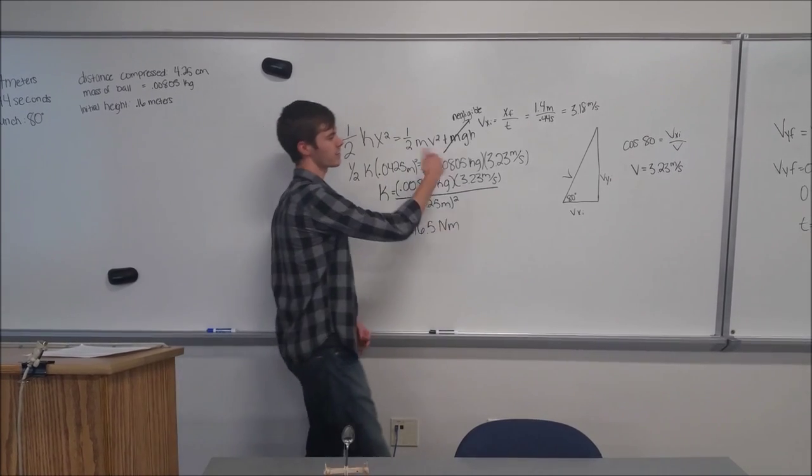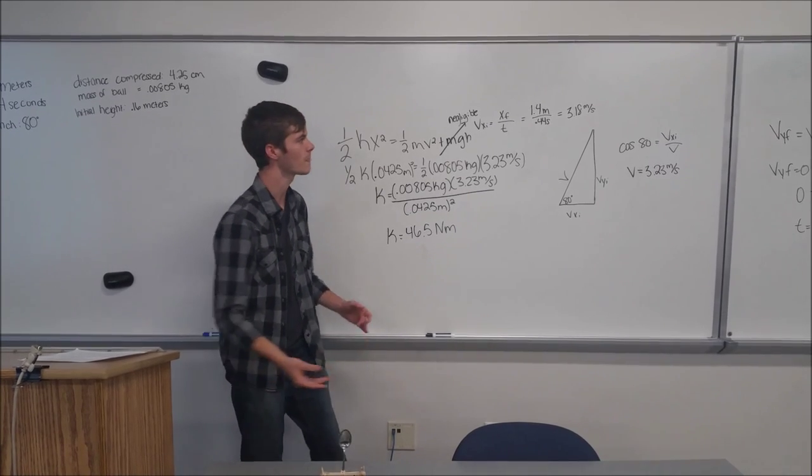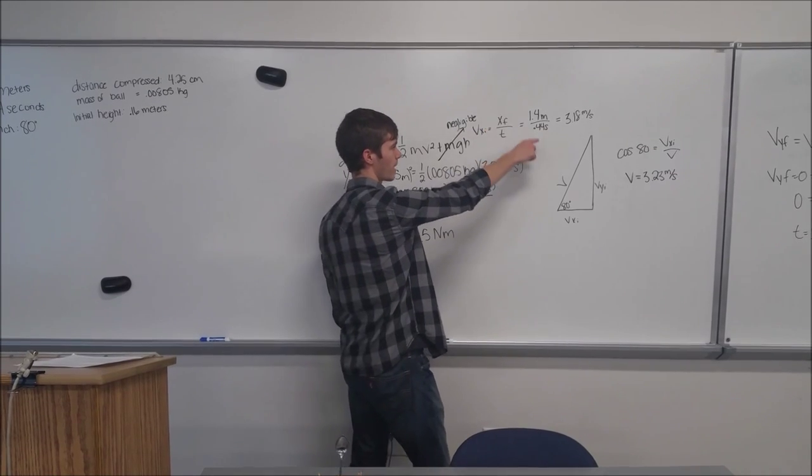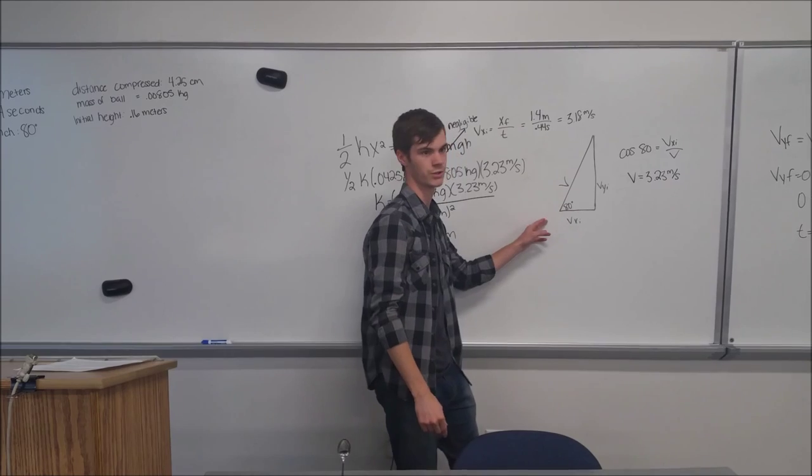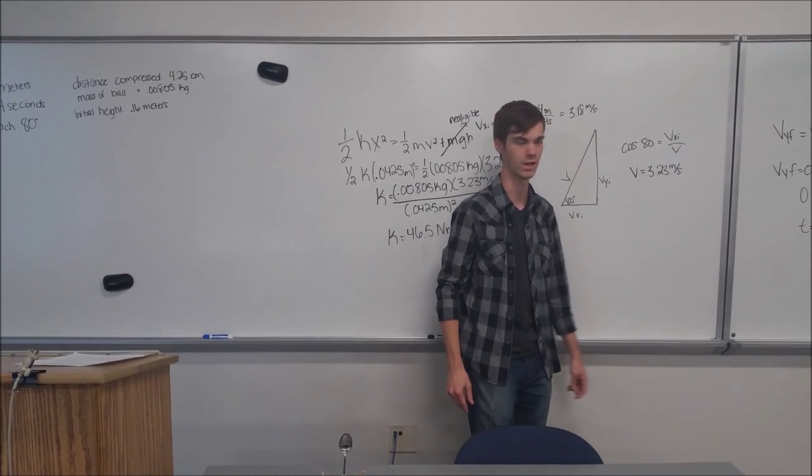We can ignore the potential energy due to the position because it's really small. We can measure the initial velocity by dividing our range over the time interval, and we can do some trig using our original angle to come up with the magnitude of the velocity.